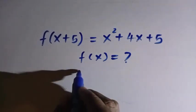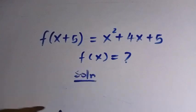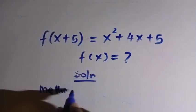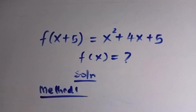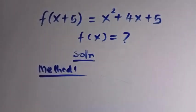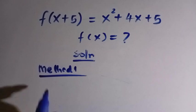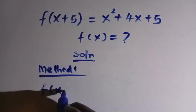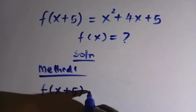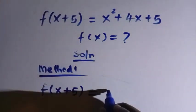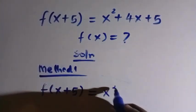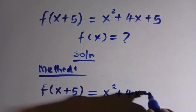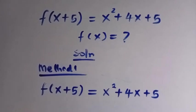The first thing is we consider the solution from here, and I'll consider this as Method 1. For the first method, I'm going to use form manipulation to solve this. So from the left hand side, we have f of x plus 5 equals x squared plus 4x plus 5, which is the given equation.